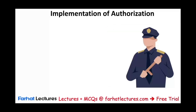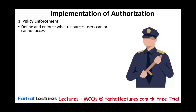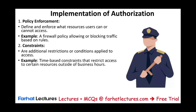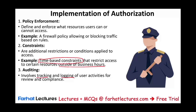How do we implement authorization and make sure it's being followed? One approach is policy enforcement — defining and enforcing what resources users can or cannot access. One way to enforce this is to create a firewall, allowing or blocking traffic based on certain rules. You could also have constraints — additional restrictions or conditions applied to access. For example, a time-based constraint restricts access to certain resources outside of business hours. You add constraints in addition to authentication and authorization. Auditing involves tracking and logging of user activities for review and compliance — a log showing who accessed a specific file and when — so you know what's going on and ensure authorization is being followed properly.